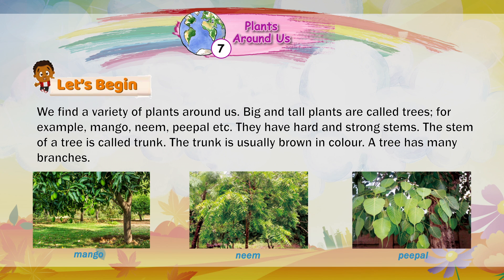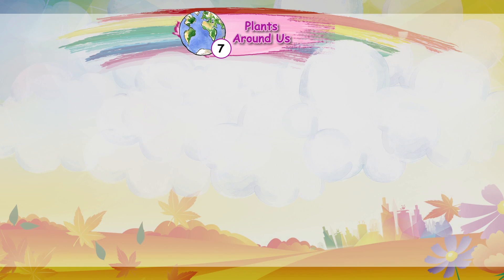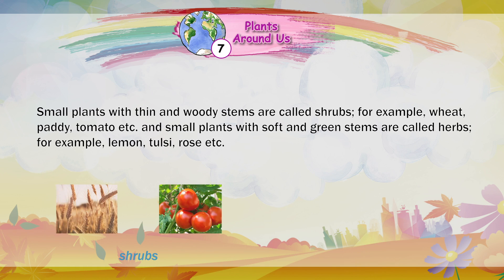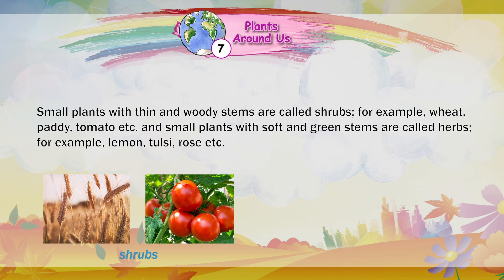A tree has many branches. Small plants with thin and woody stems are called shrubs. For example, wheat, paddy, tomato, etc.